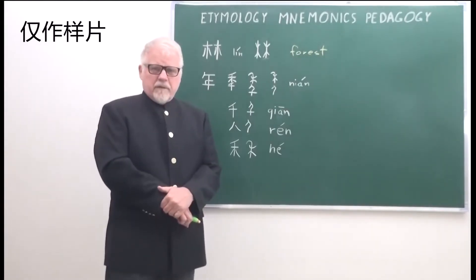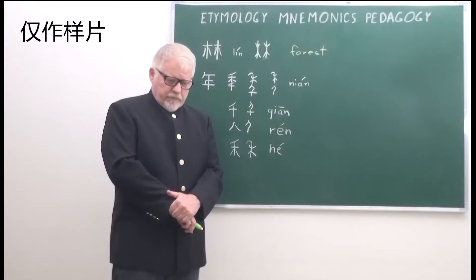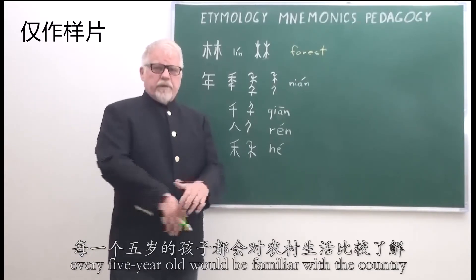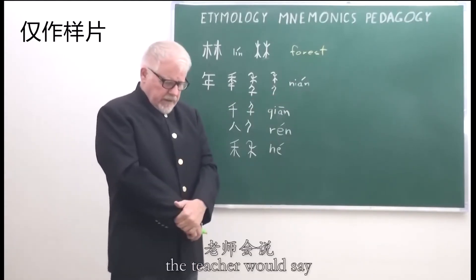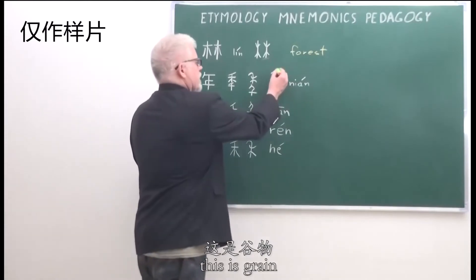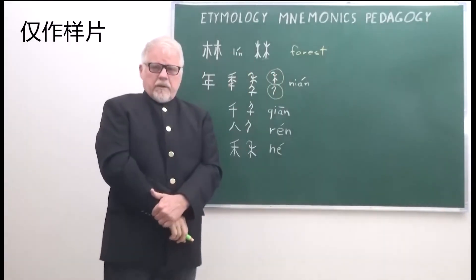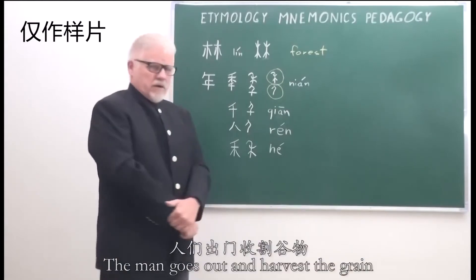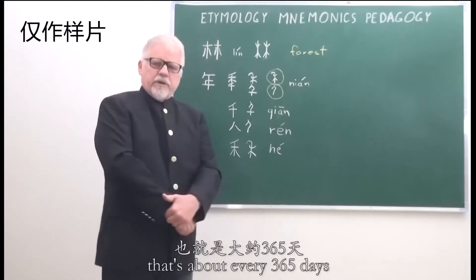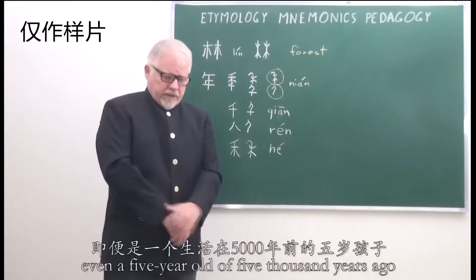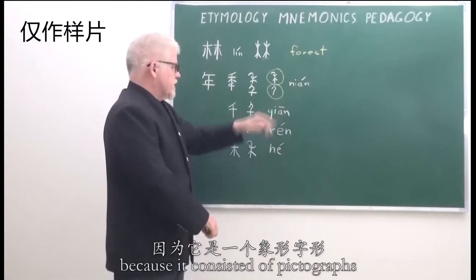An example of how you would teach a five-year-old: if we go back five thousand years, every five-year-old would be familiar with the countryside. The word for nian, or year, would be written like this. The teacher would say, okay, this is grain, and this is a man — once a year we harvest the grain. The man goes out, harvests the grain, and comes in, so that means once a year, about every 365 days. For a small child, even a five-year-old of five thousand years ago, this character for nian would be very easy to understand because it consisted of pictographs.